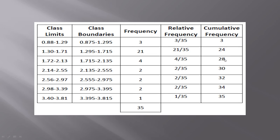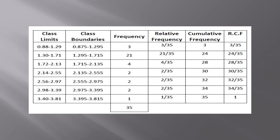To find the third class cumulative frequency value, you should add 4 to 24. Likewise, you can obtain all the cumulative frequency values for each and every class. The final cumulative frequency value should equal the total frequency value — you can see here both are 35.